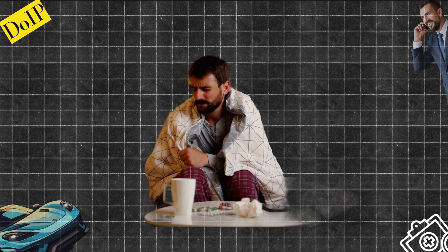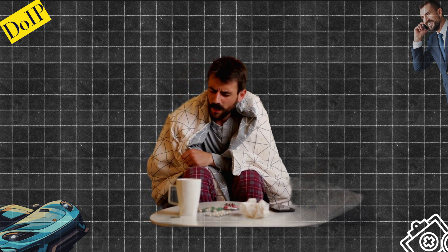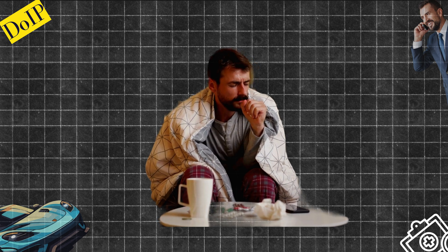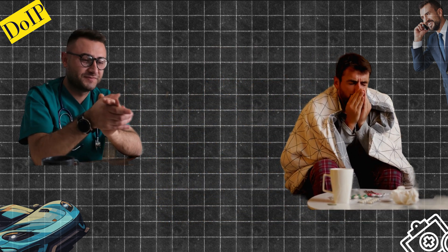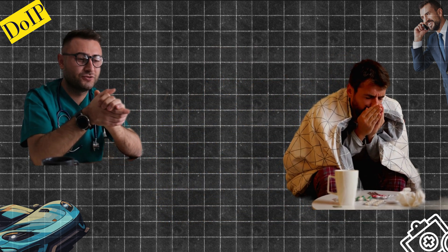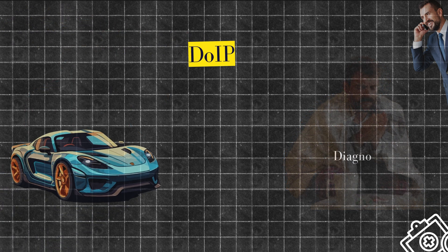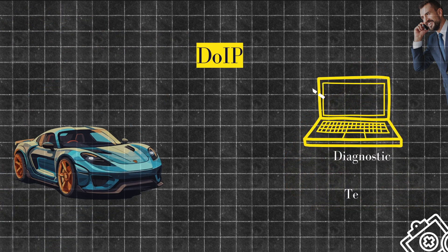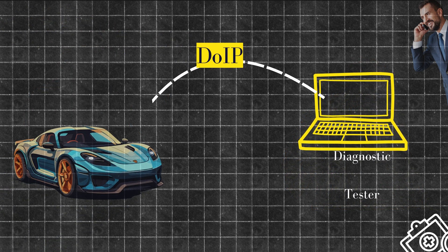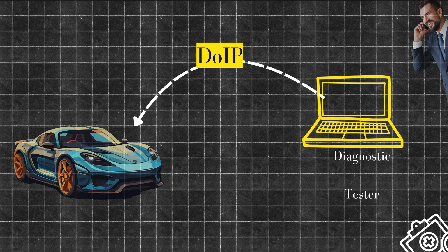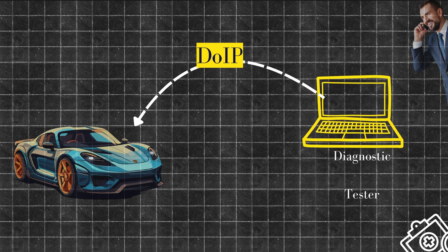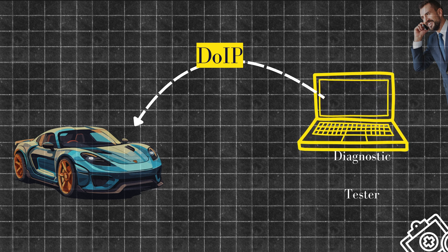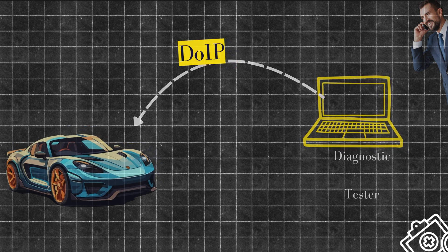Imagine you're sick and your doctor is in another city. They need to scan your vitals remotely — check your pulse, lungs, oxygen levels in real time through Zoom. That's what DOIP does: it allows external diagnostic tools to access your car's internal systems remotely over Ethernet or Wi-Fi.